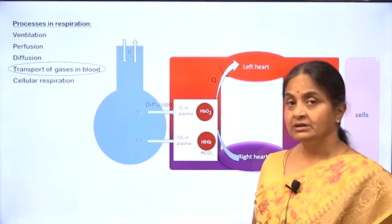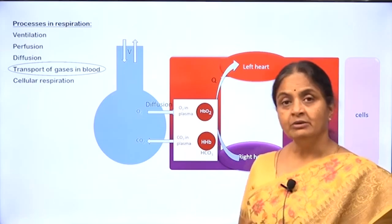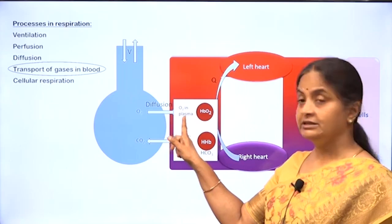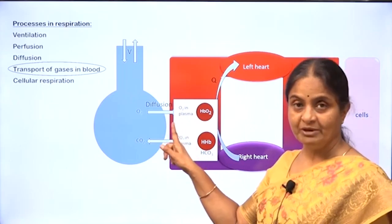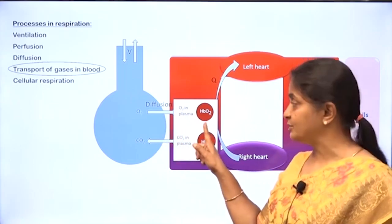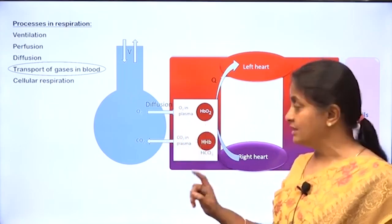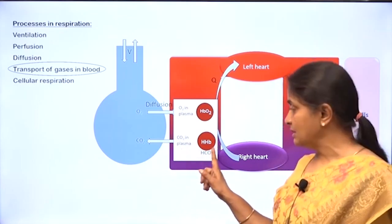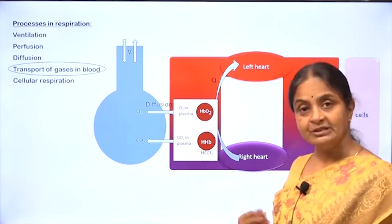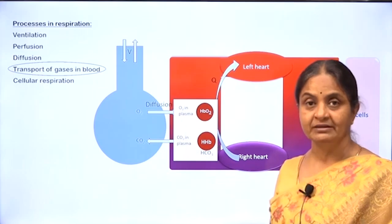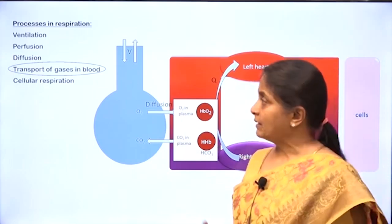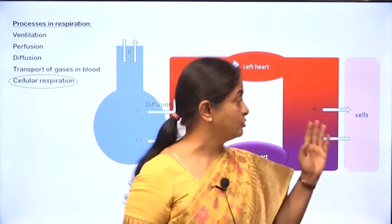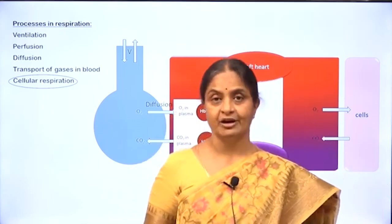We should also learn how gases are transported in blood. Oxygen is transported in the dissolved form in plasma as well as in combination with hemoglobin as oxyhemoglobin. Carbon dioxide also travels in the dissolved form as well as in certain other forms as processed by the red blood cells. Ultimately, we have to learn why cells require oxygen and how they generate carbon dioxide.